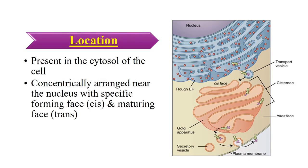The Golgi apparatus is found in the cytosol of the eukaryotic cell. It is made up of multiple flattened disc-shaped membranous sacs known as cisternae, as seen in the illustration on the right side of the slide. The Golgi apparatus has two faces: a cis face and a trans face. The cisternae closer towards the nucleus or the rough endoplasmic reticulum are known as the cis face, or the forming face, of the Golgi apparatus.